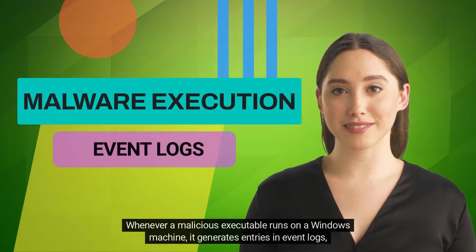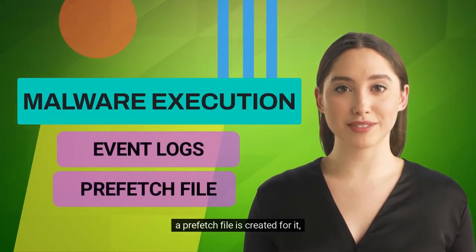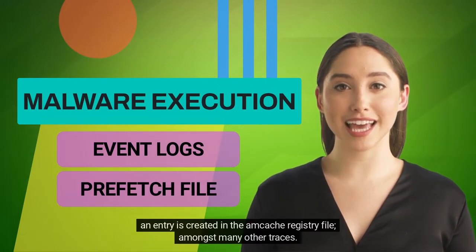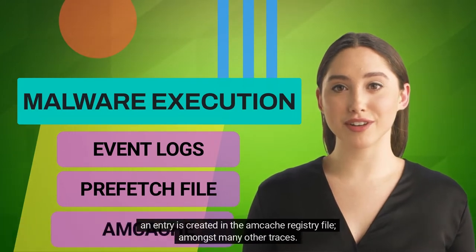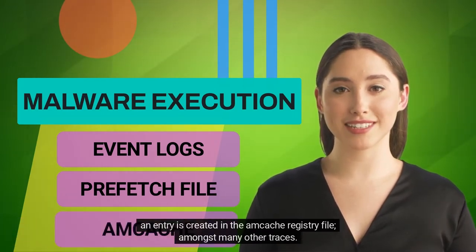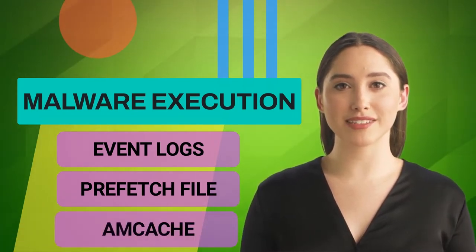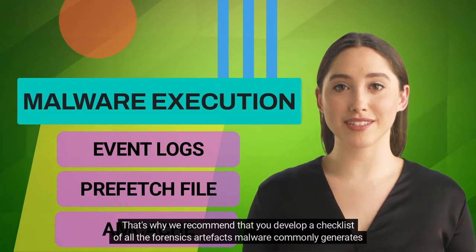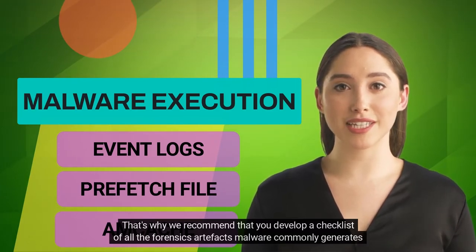Whenever a malicious executable runs on a Windows machine, it generates entries in event logs, a prefetch file is created for it, and an entry is created in the AMCache registry file, amongst many other traces. That's why we recommend that you develop a checklist of all the forensic artifacts malware commonly generates when it runs.